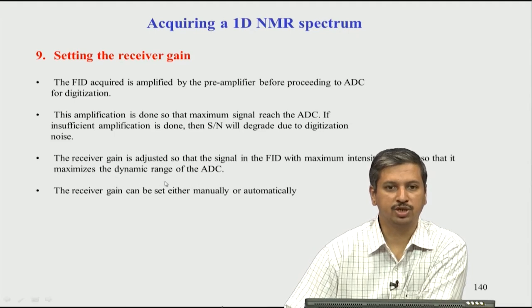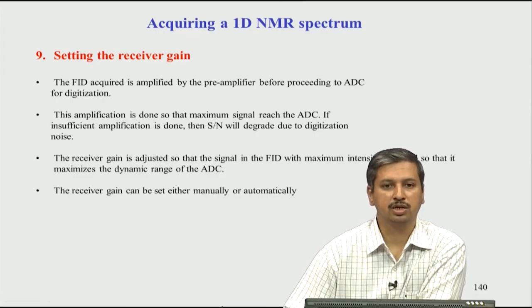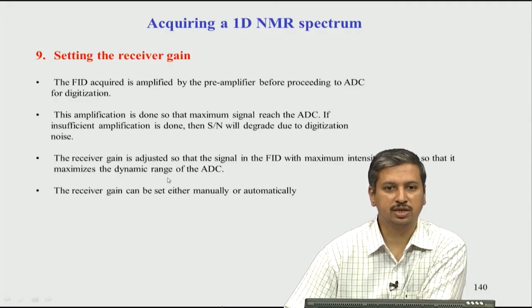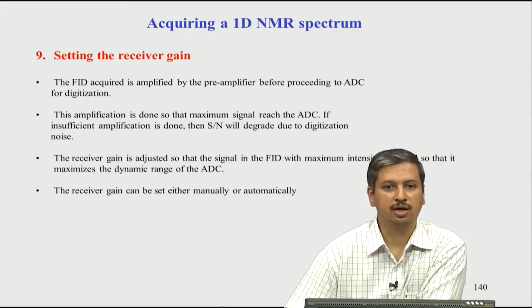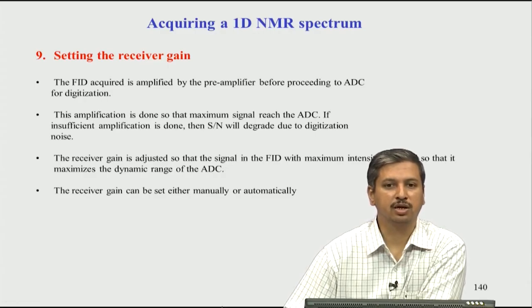This is where the dynamic range issue comes in. The ADC has a limited capacity to receive signal — it cannot arbitrarily receive any large amount of signal. For example, if you have a solvent signal in your sample with a huge signal-to-noise dynamic range, and the solvent signal exceeds the range of the ADC, you get what is called ADC overflow. Think of it like a water tank: if you fill more than its capacity, it overflows. Similarly, if signal strength exceeds what the ADC can hold, the excess signal is simply subtracted or omitted.